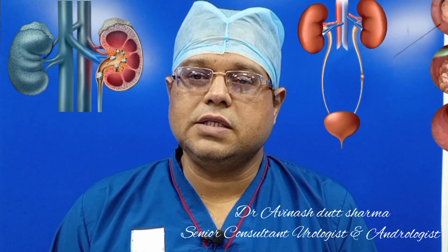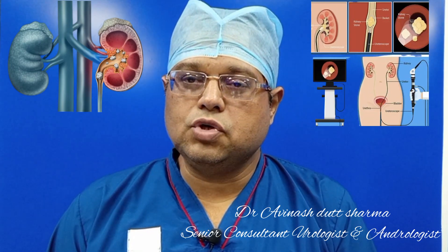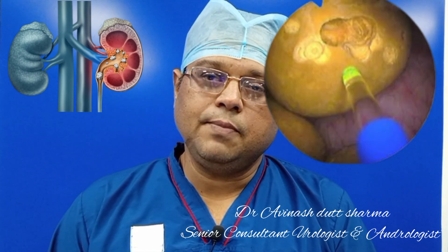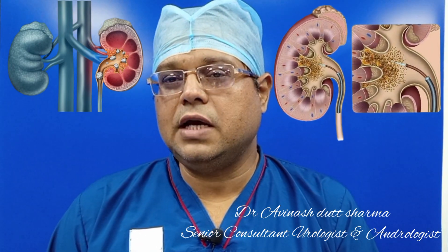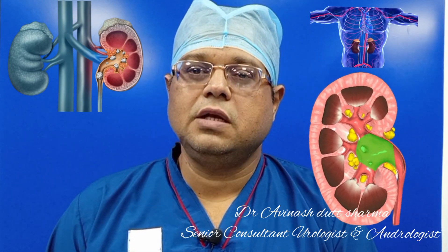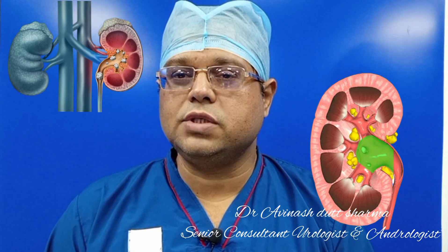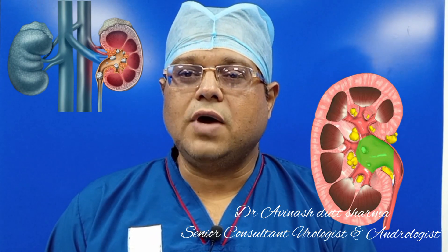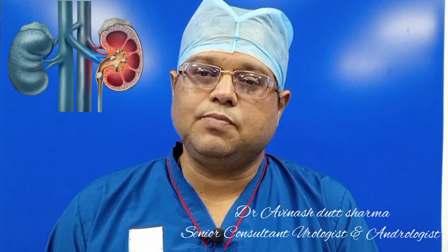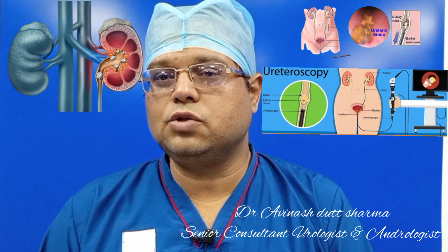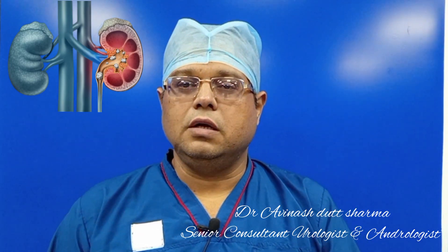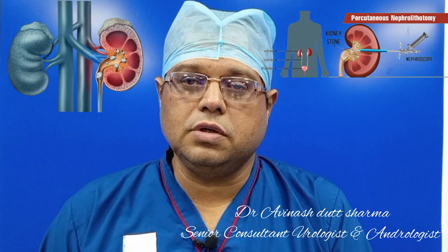If the stone is small or large and in the ureter, we perform ureteroscopic laser lithotripsy. When the stone is in the kidney, we decide the modality of treatment depending on size and site. If the stone is in the renal pelvis and is less than 2 cm, or if it is a large soft stone, we can fragment it via the urinary passage using RIRS and laser lithotripsy. If the stone is large and in the lower calyx, we perform PCNL — percutaneous nephrolithotripsy with laser.